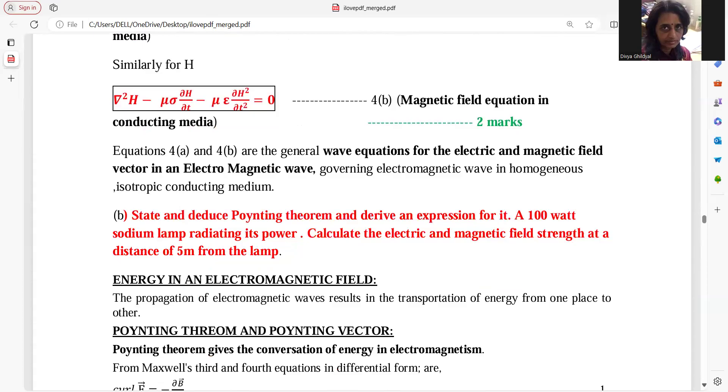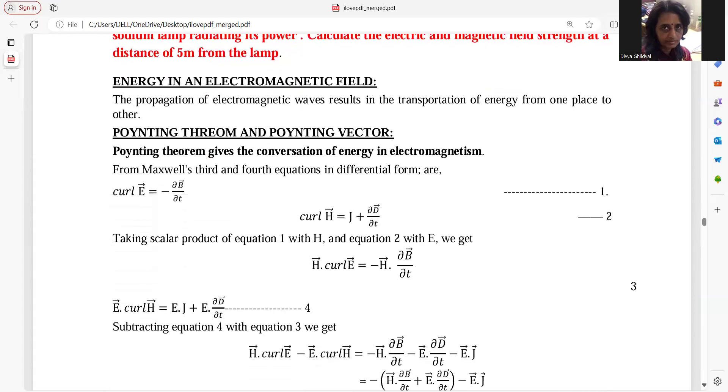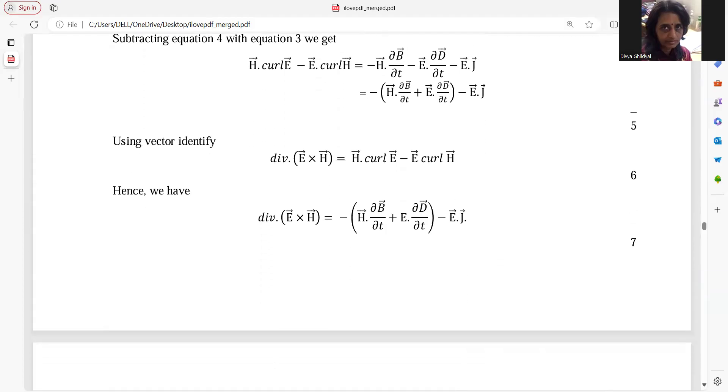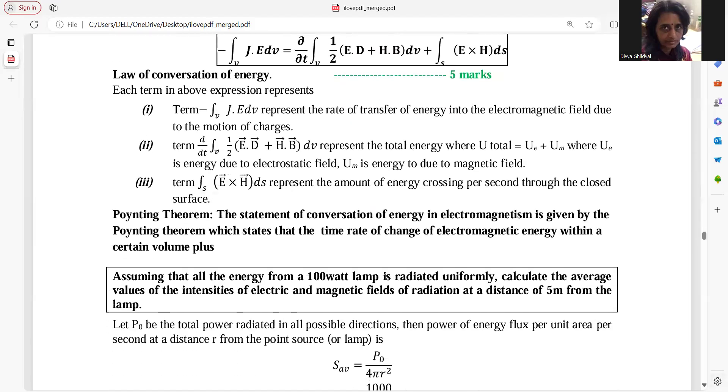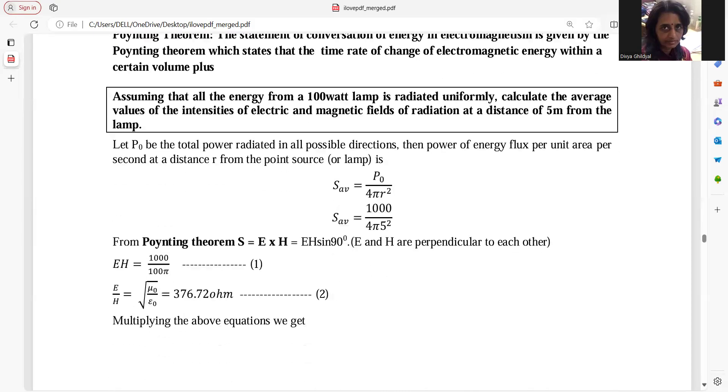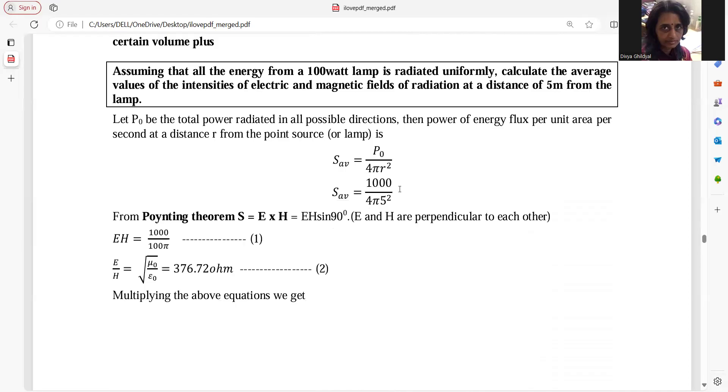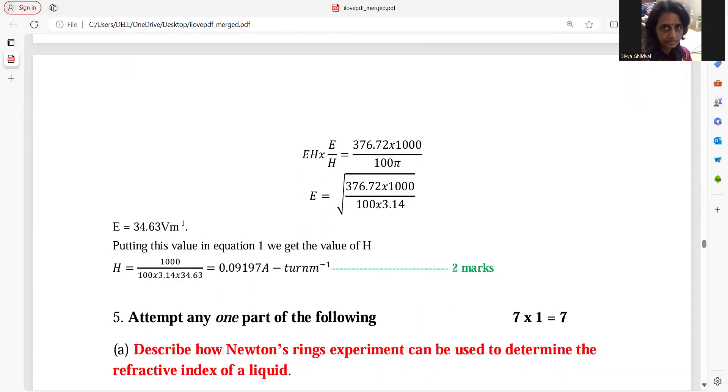Poynting theorem. This was asked last year also. And same numerical was asked last year again. We repeat that this gives the conservation of energy in electromagnetic theory. And they are asking you to derive it. Simple steps you are using. And then just explain that this is the rate of transfer of energy. This is electric field energy, magnetic field energy. And this is our famous Poynting vector. Then numerical. I think five and two marks for the numerical. That makes it seven. P upon four pi r square, because this is going to cover the area in a circular form. And then you put the values here. And E and H separately you find.